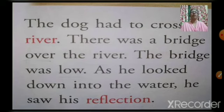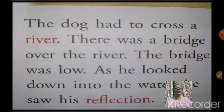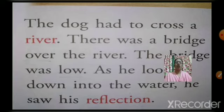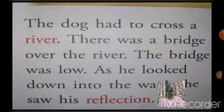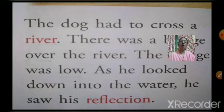The shopkeeper ran after him but could not catch him. The dog had to cross a river. There was a bridge over the river. The bridge was low. As he looked down into the water, he saw his reflection.